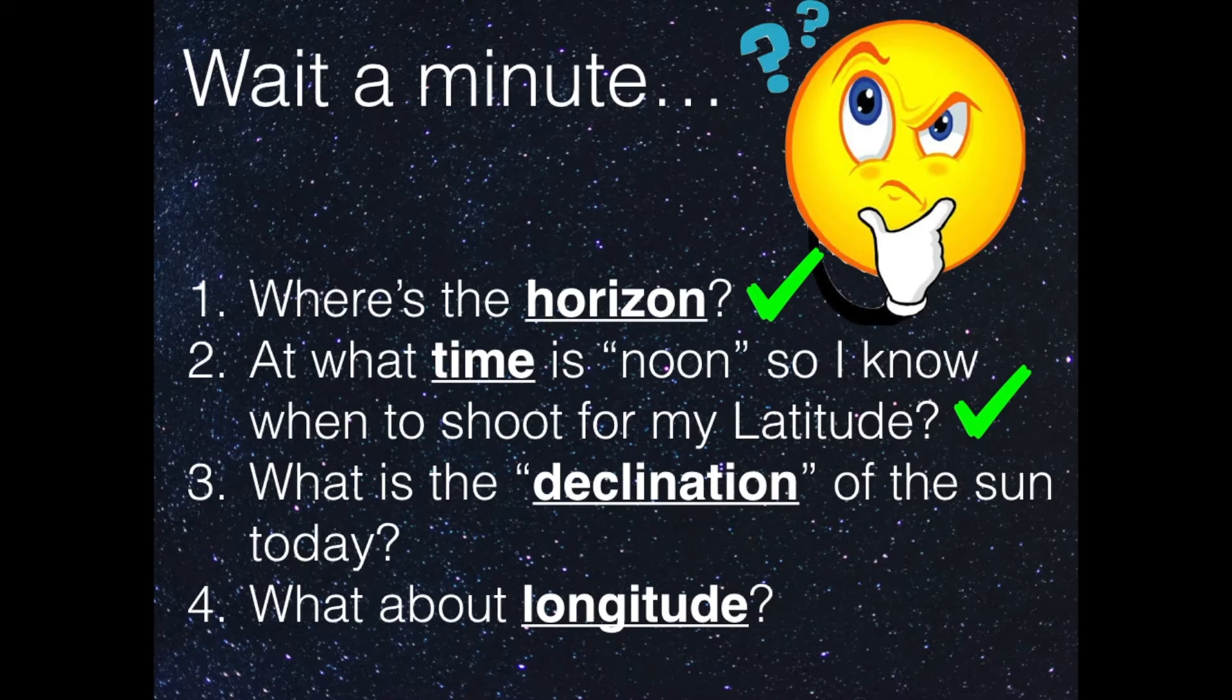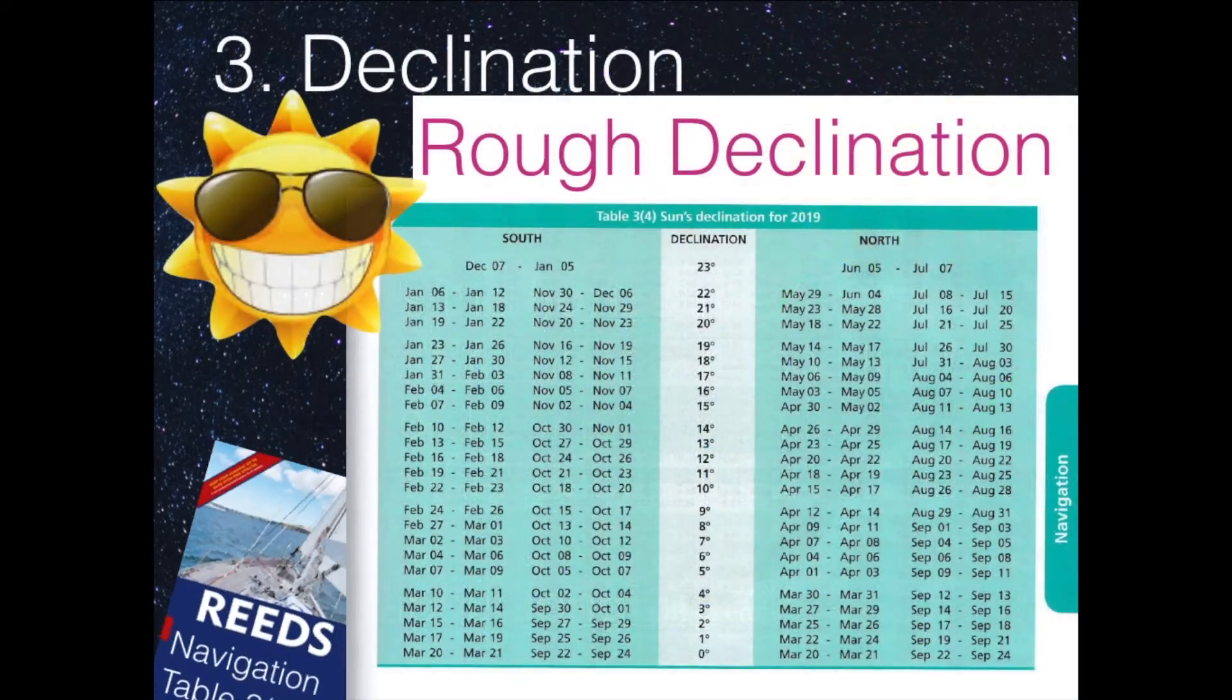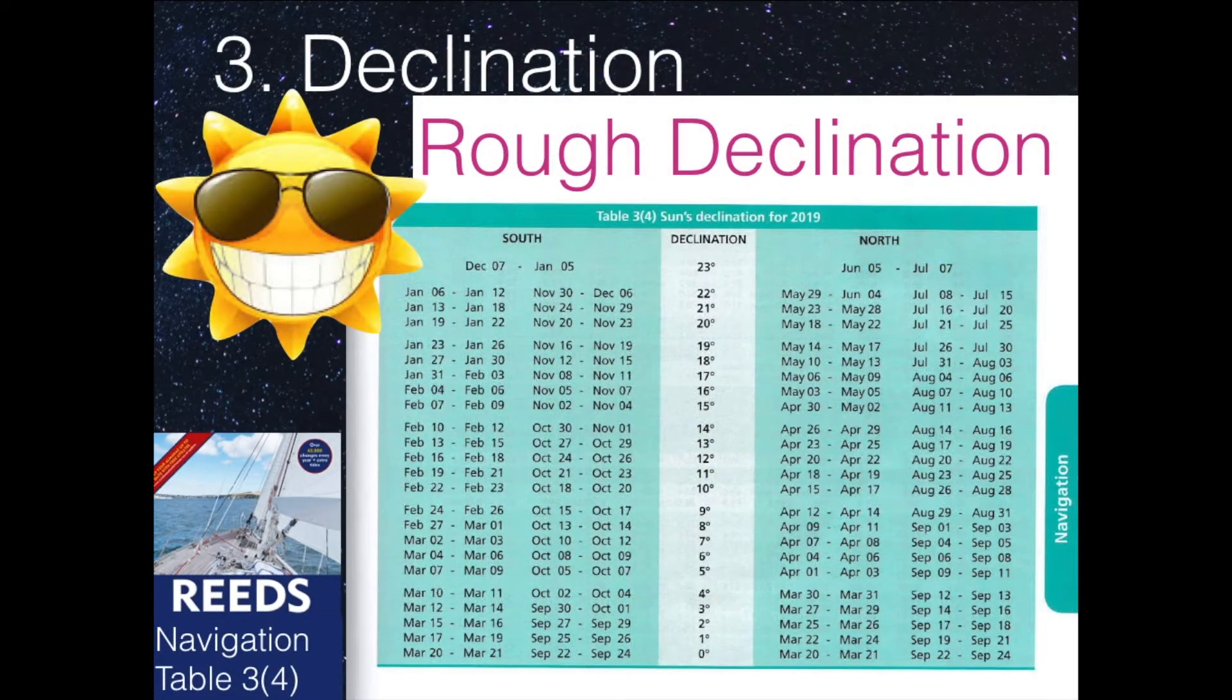And at the very end, we'll talk about the longitude. So the declination can roughly be found even in the Reed's Almanac, which is used by many sailors sailing in tidal waters in northern Europe. So this is what the old seamen did. They looked at the approximate date that we have, and then they checked what the declination is.